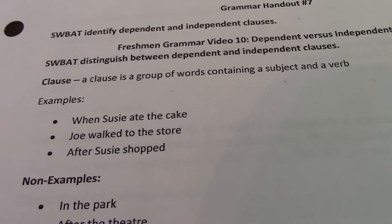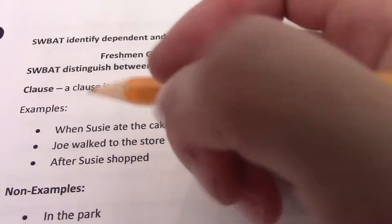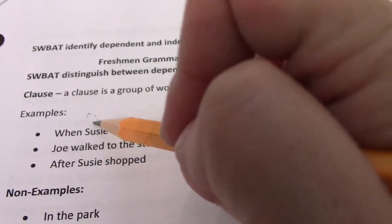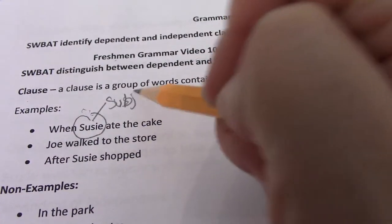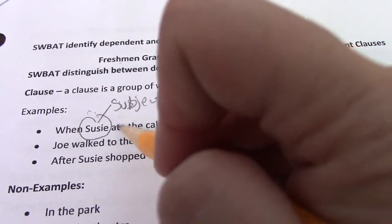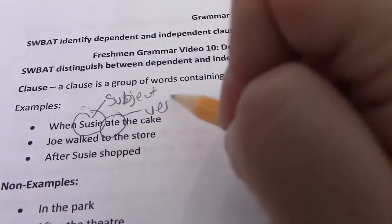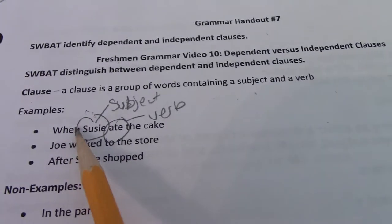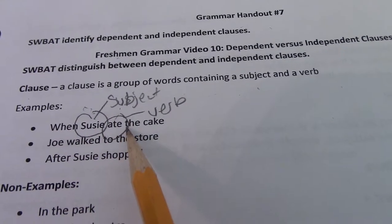Let's look at a few examples. 'When Susie ate cake.' Notice I have a subject, Susie, and I also have a verb, ate. So this is a clause because it has a subject and a verb.